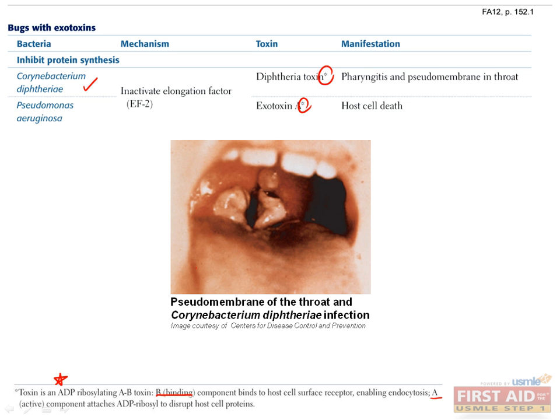Although these toxins each function a bit differently, the end result is activating the release of cAMP. Cyclic adenosine monophosphate (cAMP) is a second messenger molecule made from ATP by the enzyme adenylyl cyclase. Adenylyl cyclase is activated by stimulatory G proteins, known as Gs, and inhibited by stimulation of inhibitory G proteins, known as Gi.